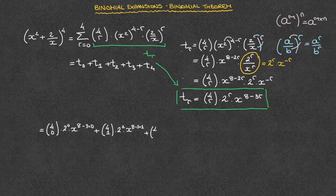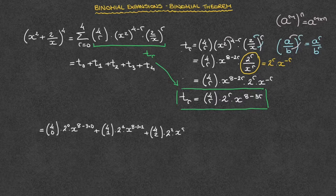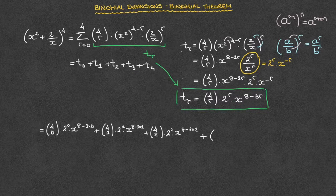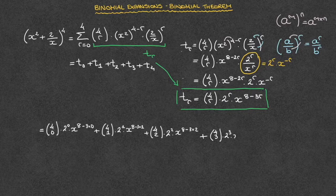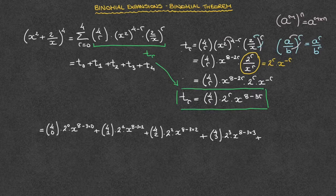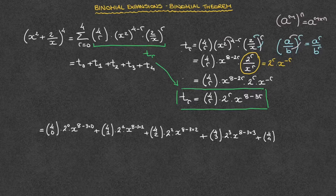So that's the binomial coefficient 4, 2, times 2 raised to the power of 2, times x raised to the power of 8 minus 3 times 2. Plus t3, where we replace every single r by 3. So that's the binomial coefficient 4, 3, times 2 raised to the power of 3, times x raised to the power of 8 minus 3 times 3. And finally, we add t4, for which we replace every single r by 4. So that's the binomial coefficient 4, 4, times 2 raised to the power of 4, times x raised to the power of 8 minus 3 times 4.